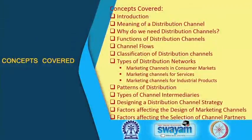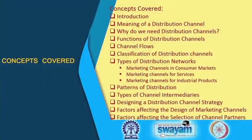In this particular topic, we shall discuss several topics: we will start with an introduction, then move on to defining a distribution channel, why we need distribution channels, what are the functions of distribution channels, what are channel flows, and the classification of distribution channels. In the subsequent lecture (Part 2), we will talk about the types of distribution networks — marketing channels in consumer markets, for services, and for industrial products — as well as patterns of distribution, types of channel intermediaries, how to design a distribution channel strategy, and factors which affect the design and selection of channel partners.